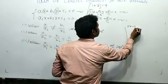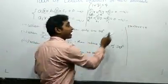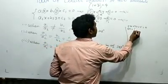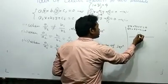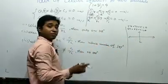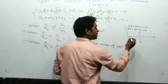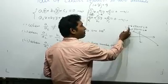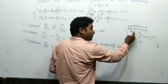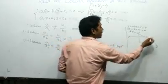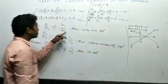Suppose we take 2x + 3y + 5 = 0 and draw its graph, and also take 5x + 6y + 7 = 0 and draw its graph. These are two straight lines on the coordinate plane.